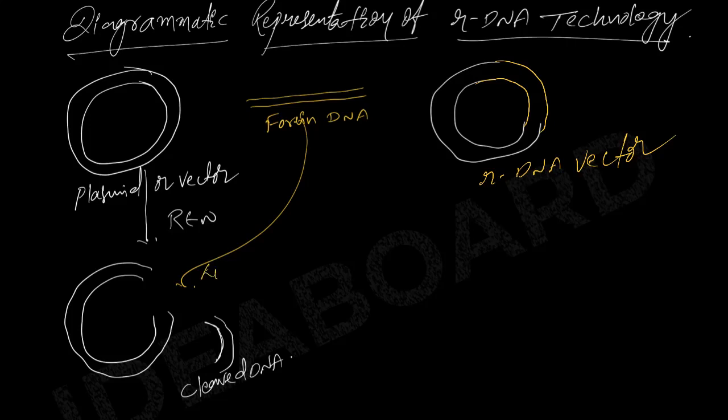This will be joined with the help of ligase enzyme, either E. coli ligase or T4 DNA ligase enzyme. Now, rDNA vector will be formed.